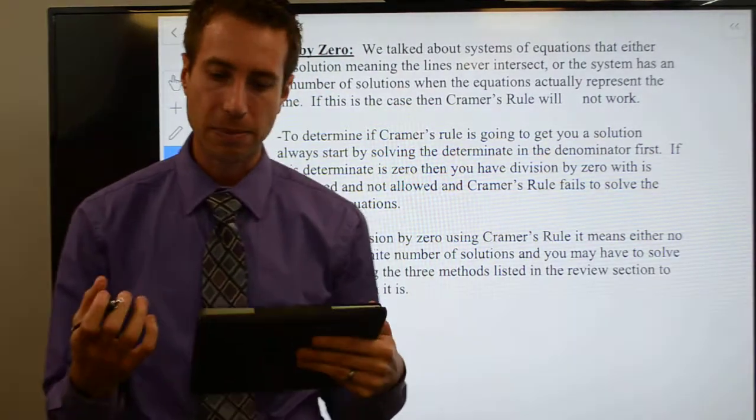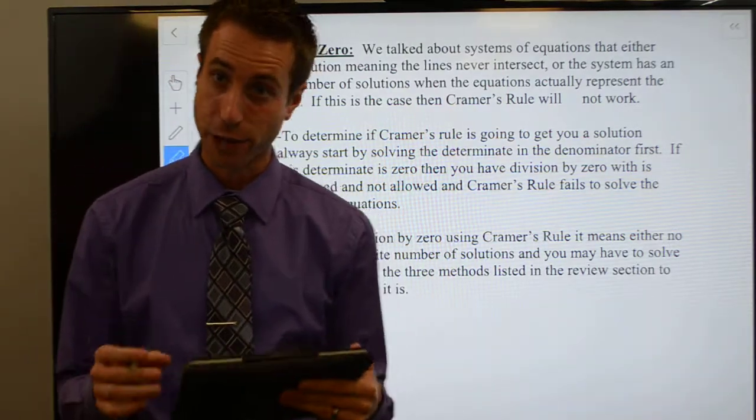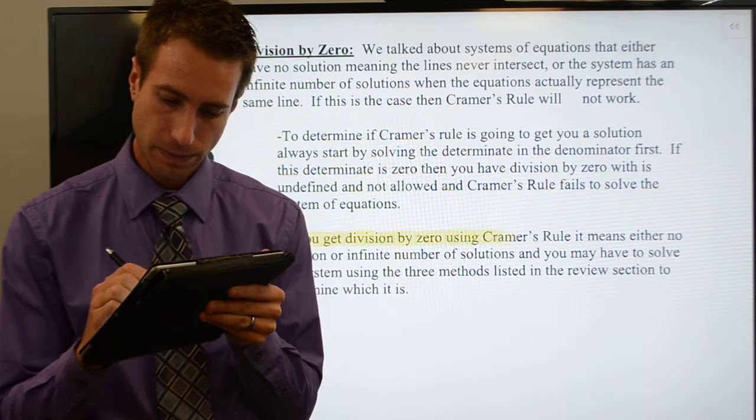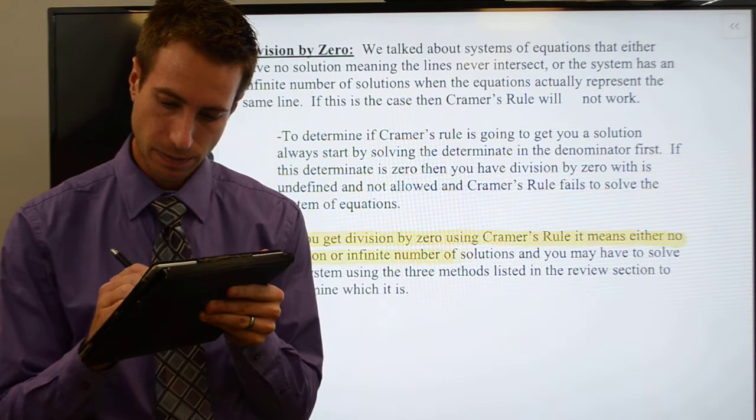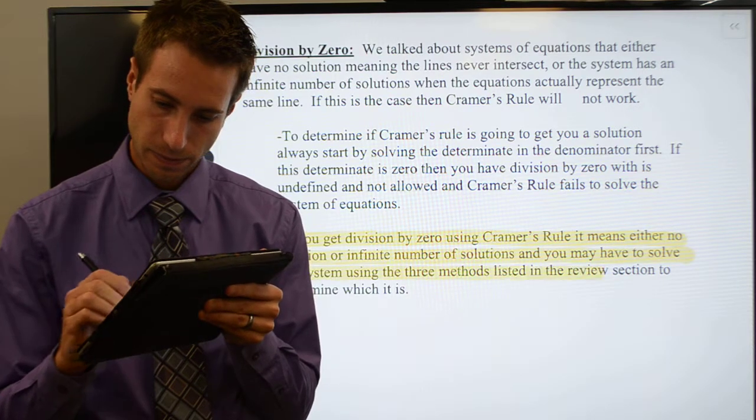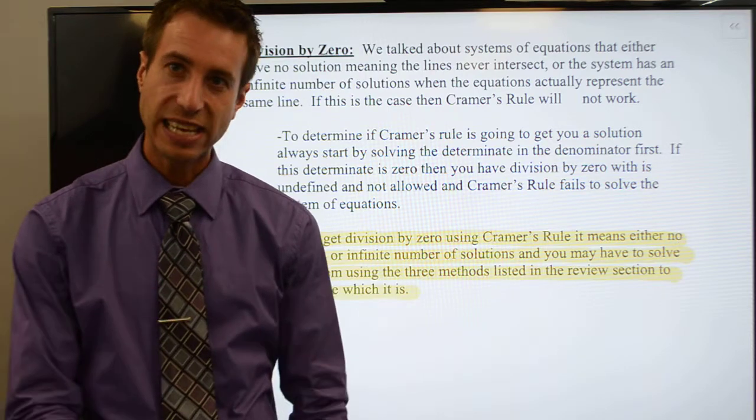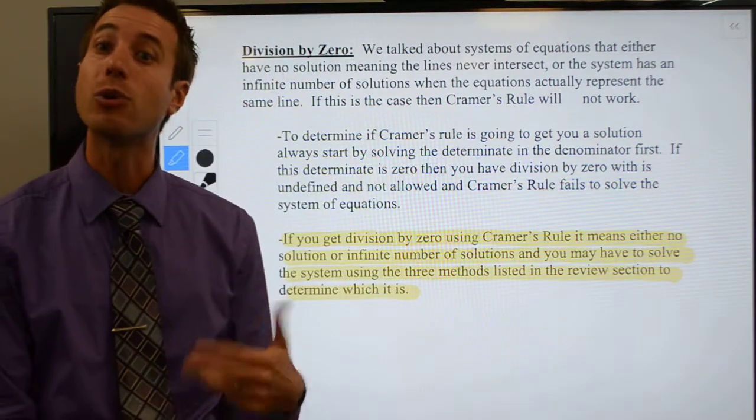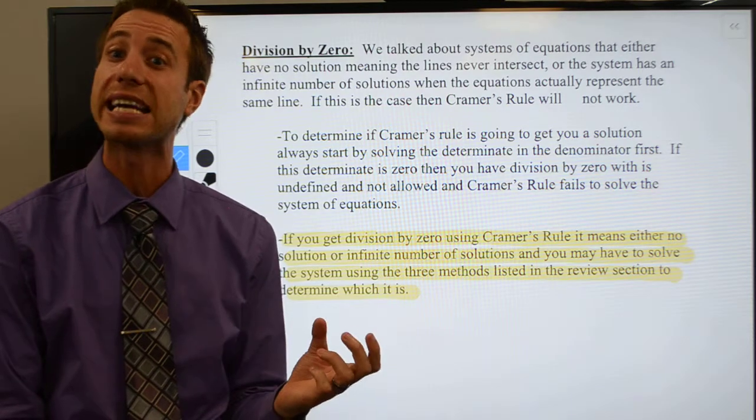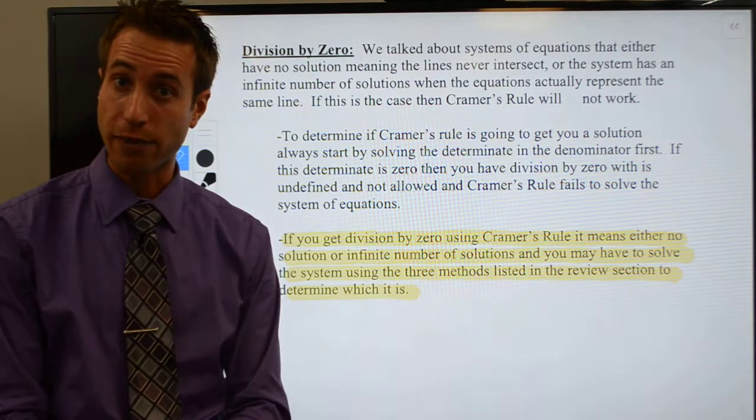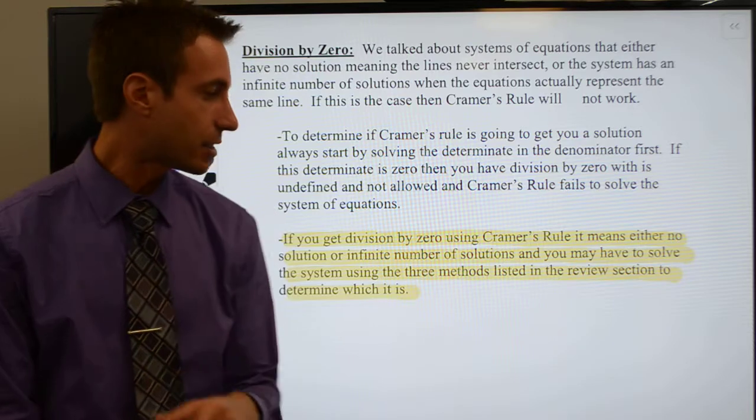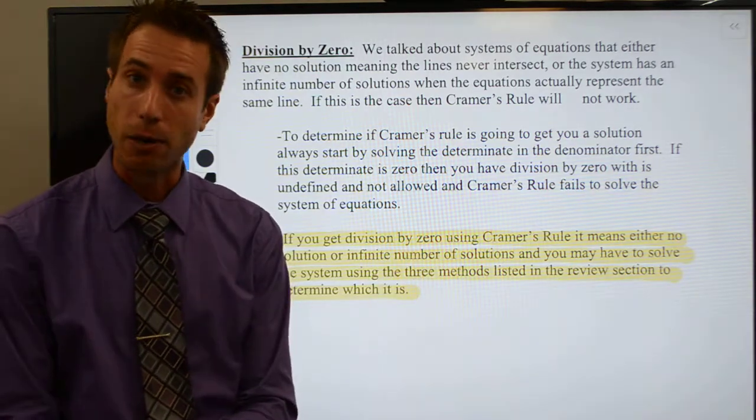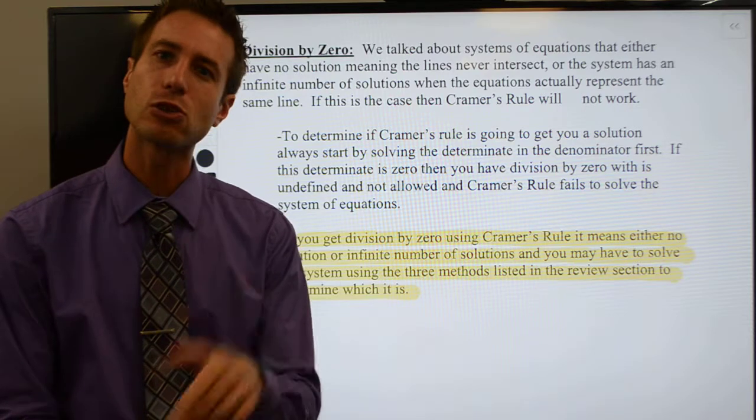If you ever wind up getting a determinant for the coefficient matrix that is zero, well since we divide in Cramer's rule to find the value of our variables we wind up dividing by the determinant of the coefficient matrix, if that determinant comes out to be zero, we're dividing by zero which is not allowed and here's what it means.